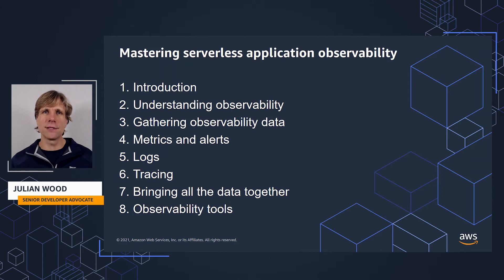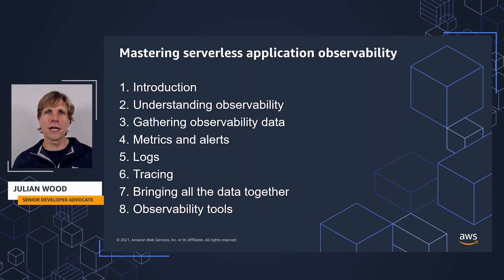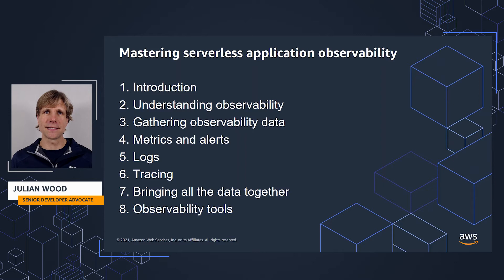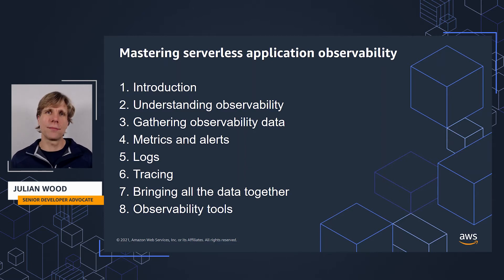In the series, I go through adding observability to a demo serverless application, which you can try yourself. After this introduction, I'm going to spend a good amount of time going through what observability is, to help you understand the benefits and how it differs from monitoring, and explore the data that can help give you those insights. Then I go through how to gather and use metrics, alerts, logs, and traces with the demo application using AWS services. I'll show how you can bring all the data together to understand your application better, answer questions about your application, or troubleshoot an issue. Lastly, I cover how to integrate some observability tools into your development workflows.